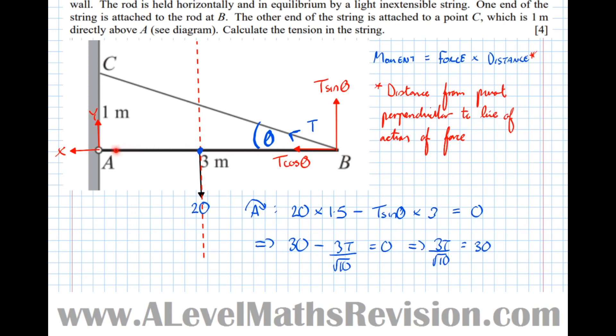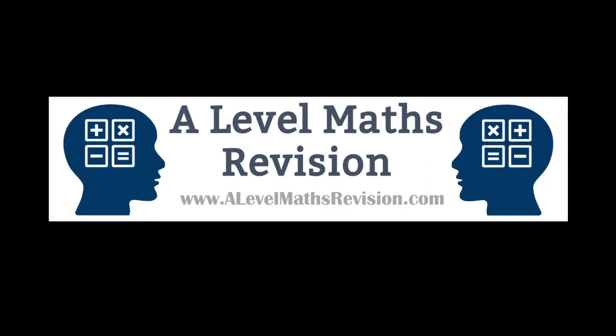So this time the line of action of the force is directly up in effect. Therefore, the distance directly to the pivot is 3 metres. So that's why we did T sine theta, which is the vertical component, times 3. For more videos like this, subscribe to our YouTube channel. And to find out more about our Skype tuition and revision courses, go to alevelmathsrevision.com.